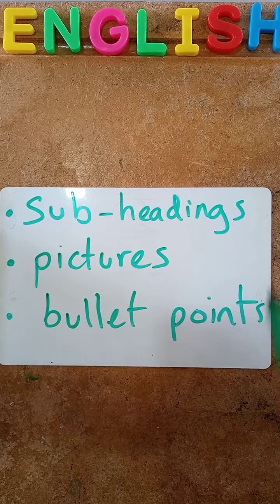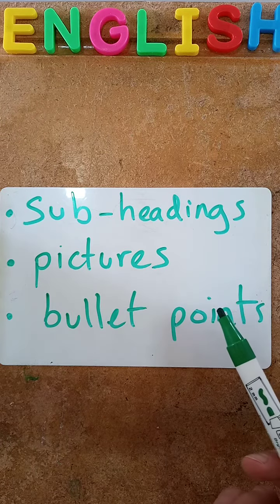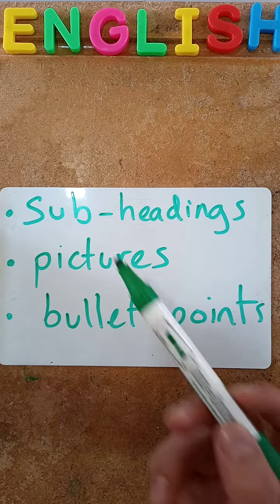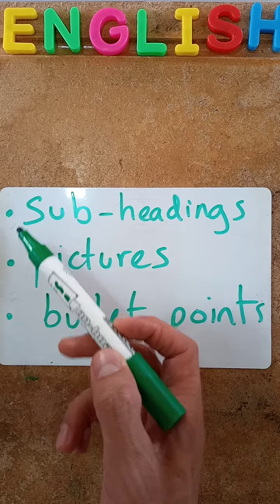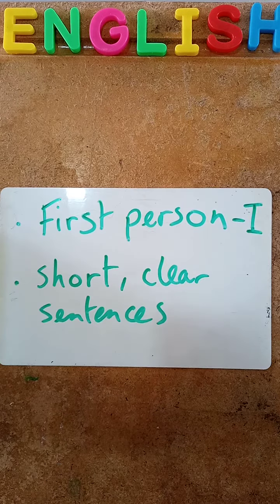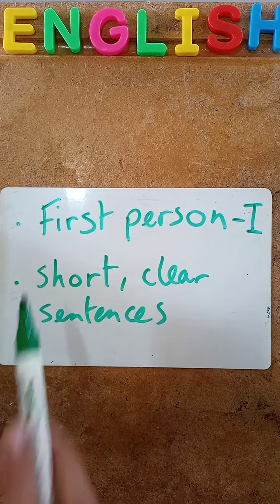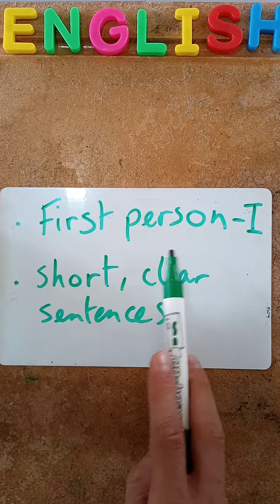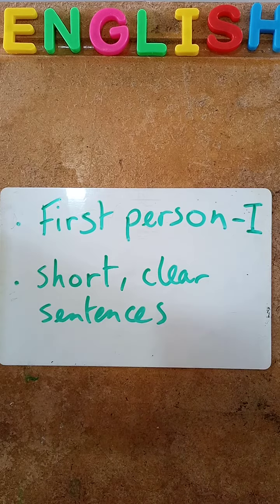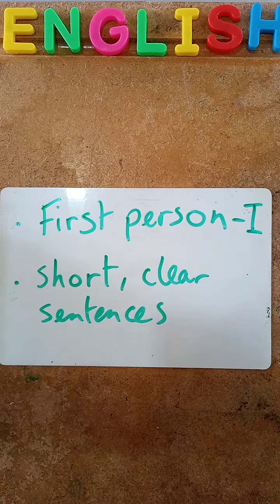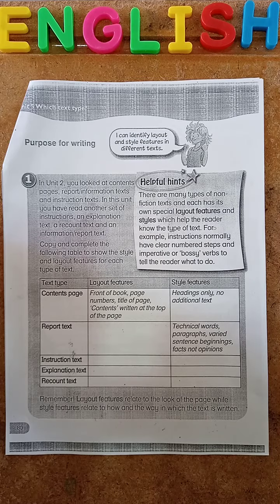So subheadings, pictures, bullet points — of which we have some here. It might be written in the first person, for example, I or we. There might be short, clear sentences. Hopefully you've got a few ideas and they've helped you to remember some other ones as well.